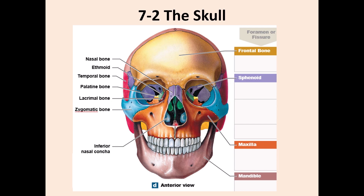Inside the nasal cavity you have the ethmoid bone, the vomer, and the inferior nasal concha. The upper jaw is the maxilla. In the lower part is the lower jaw - the mandible - and the teeth are attached to it.